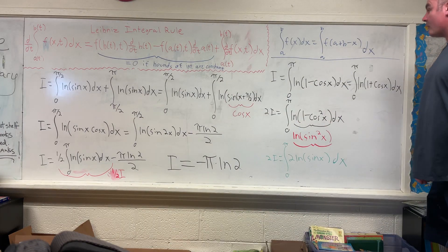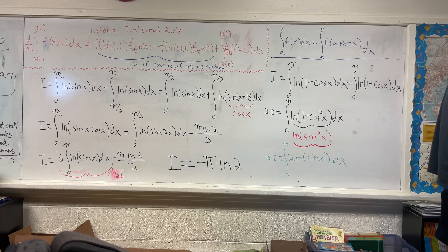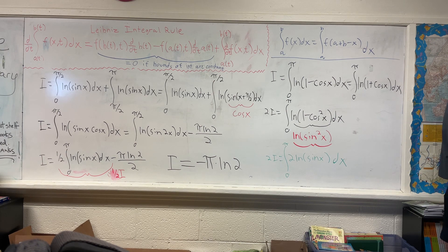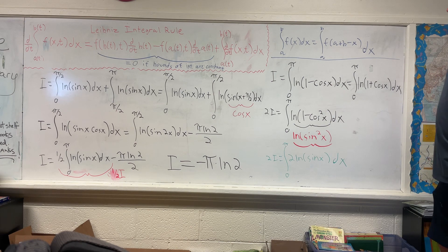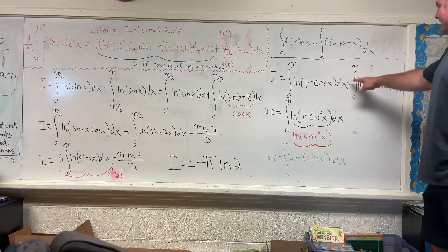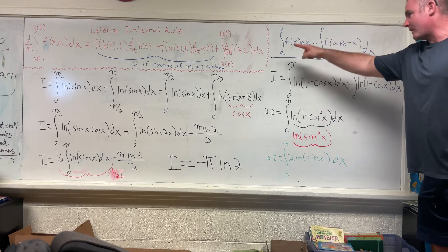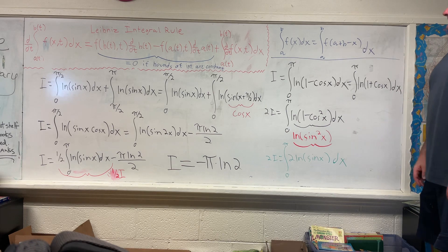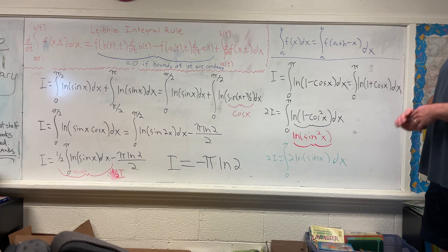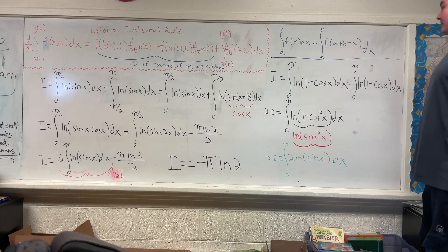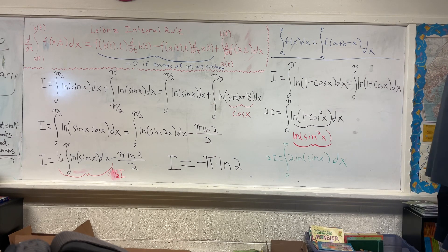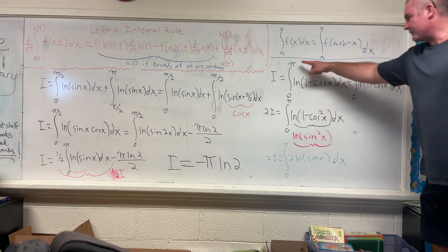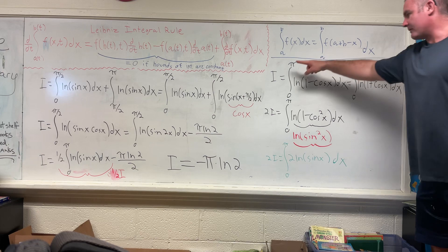Hi everybody, welcome back. This is not actually going to be a Feynman integration video. Like I said in my last video, we will be re-evaluating this integral using King's property, which states that the integral from a to b of f(x) dx is equal to the integral from a to b of f(a + b - x) dx.